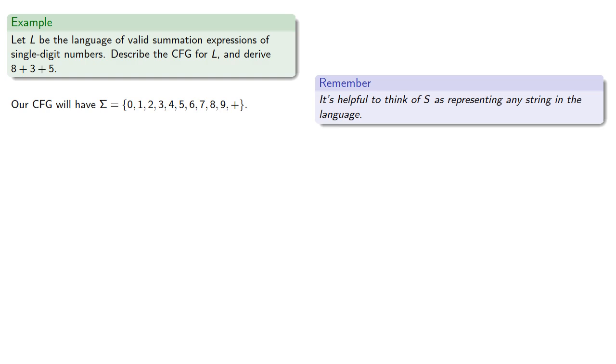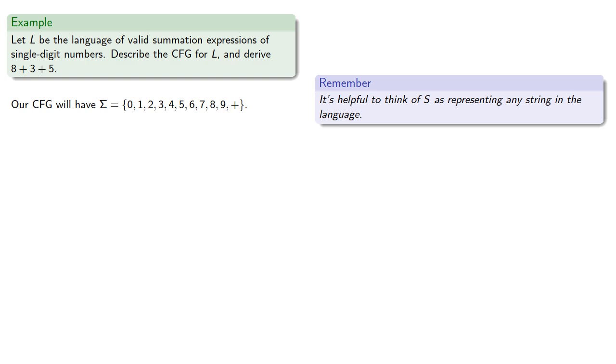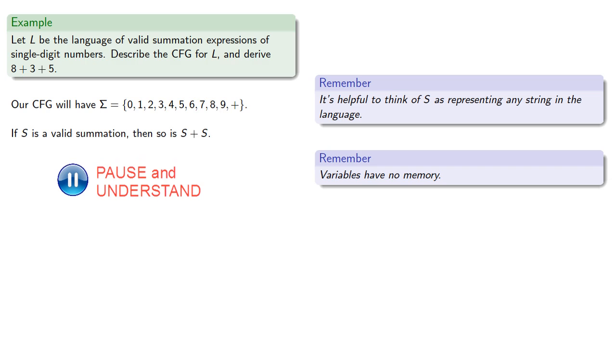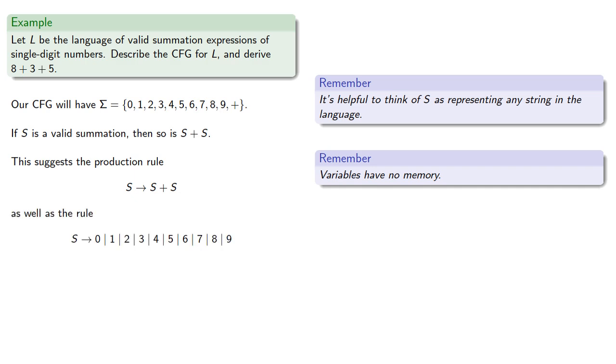Remember, it's helpful to think of S as representing any string in the language, and variables have no memory. If S is a valid summation, then so is S + S. This suggests the production rule S → S + S, as well as the rule S → 0|1|2|3|4|5|6|7|8|9.